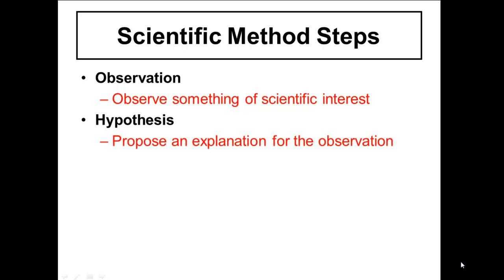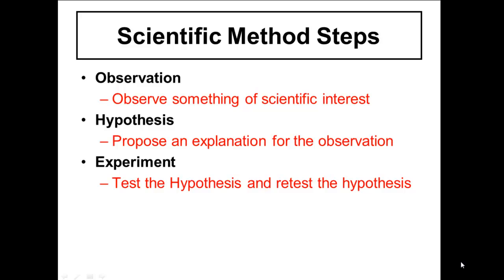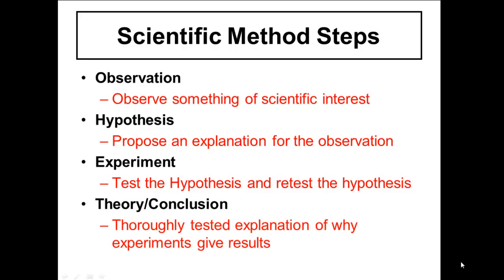When you follow the system, an observation leads to a hypothesis — you try to explain that observation. Then you follow it up with experiments that test your hypothesis, and lastly you make a theory or conclusion. An important point: you have to retest your hypothesis. The experiment needs to be done a few times, because the first experiment might not be right. You want to make sure you retest to confirm the theory or conclusion you ultimately reach.